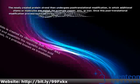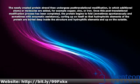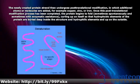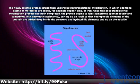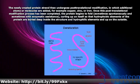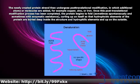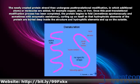The newly created protein strand then undergoes post-translational modification, in which additional atoms or molecules are added, for example copper, zinc, or iron. Once this post-translational modification process has been completed,